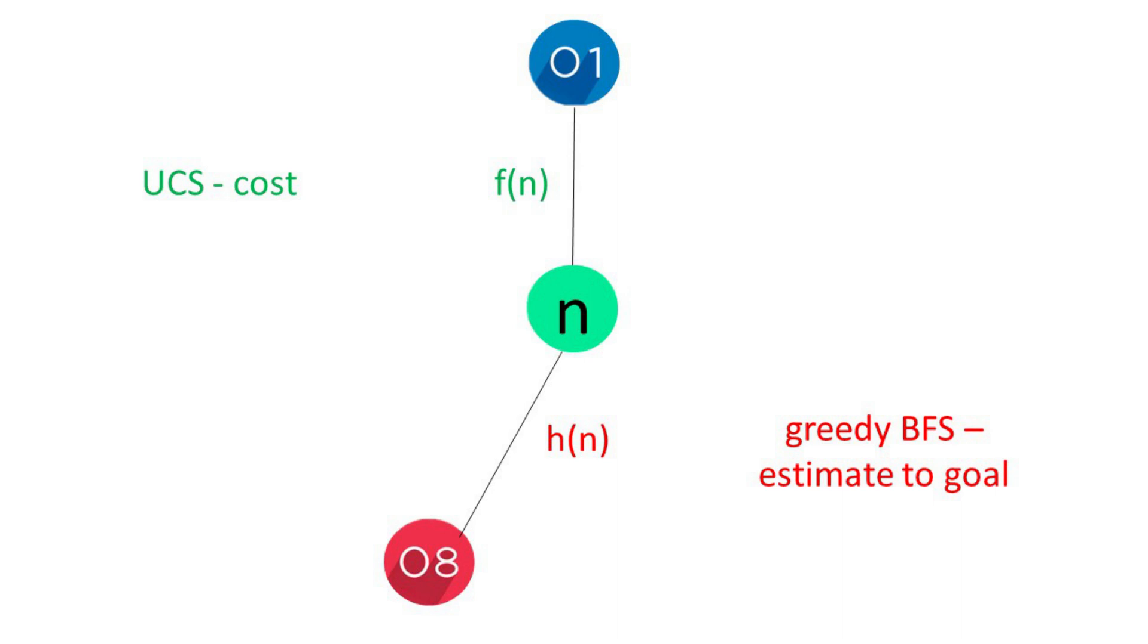So if you like, the cost is the distance to n, and the estimate, the heuristic, is the estimated distance from n to the goal.